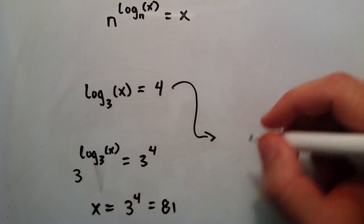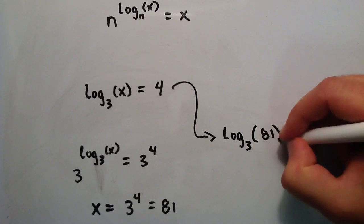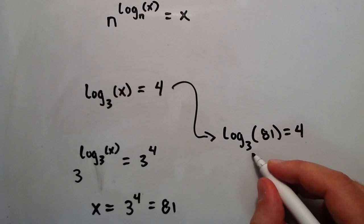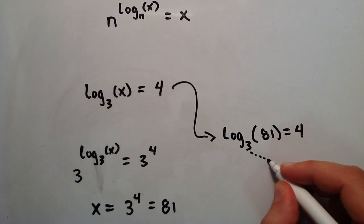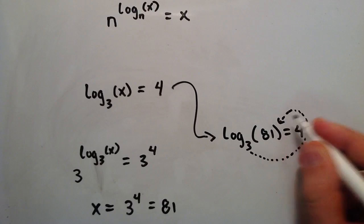And plugging it back into here, we're saying that log base 3 of 81 equals 4. And looking at it like I showed you in lesson one, that basically means that 3 raised to the fourth power equals 81. So this makes sense.